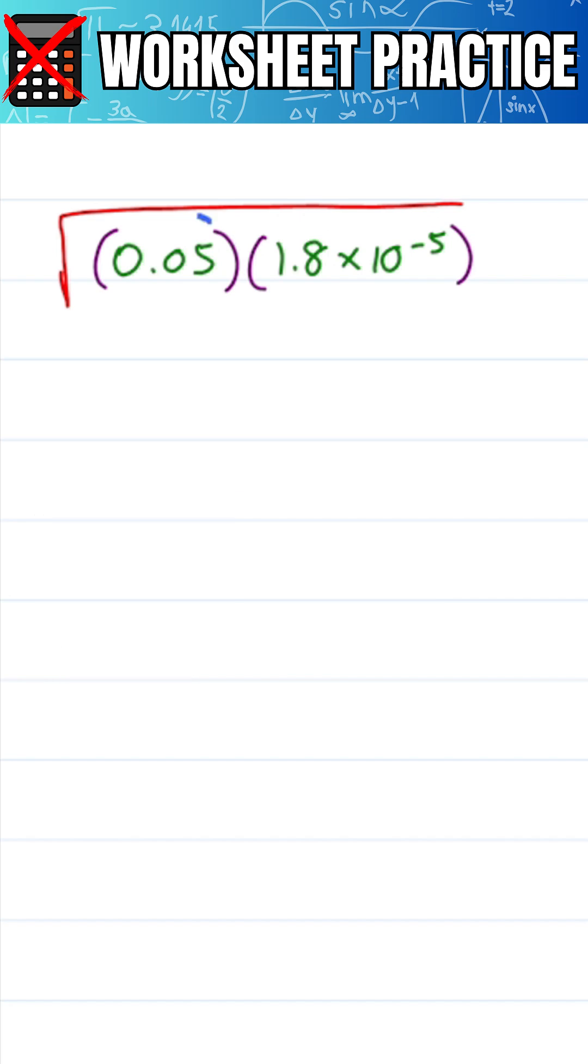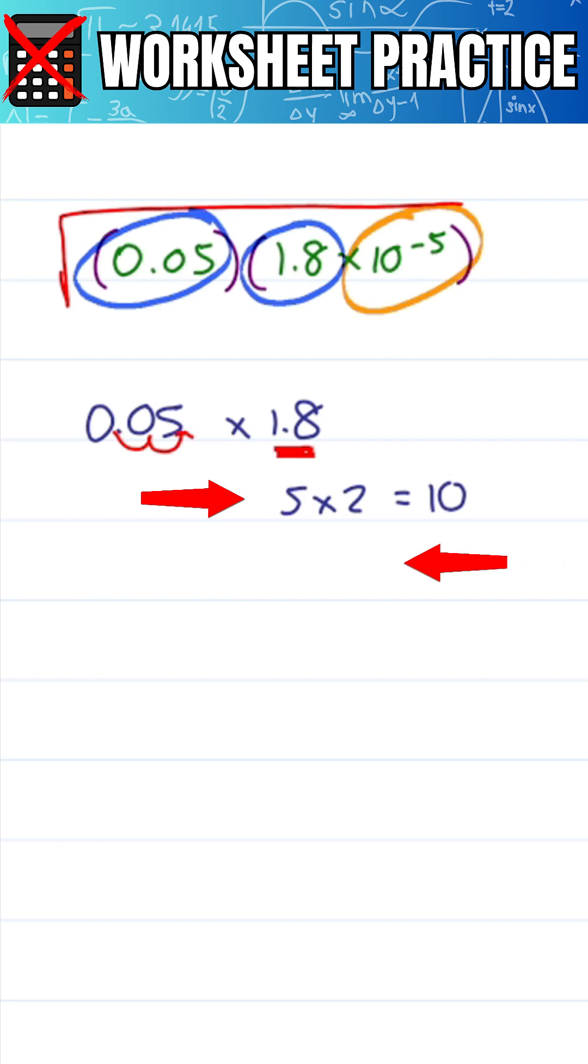Let's break it down starting with 0.05 times 1.8. We'll round 1.8 to 2 giving me 5 times 2 for an easy 10. But don't forget the two decimals. We move this one twice to the right and so we have to move the answer's decimal twice to the left.